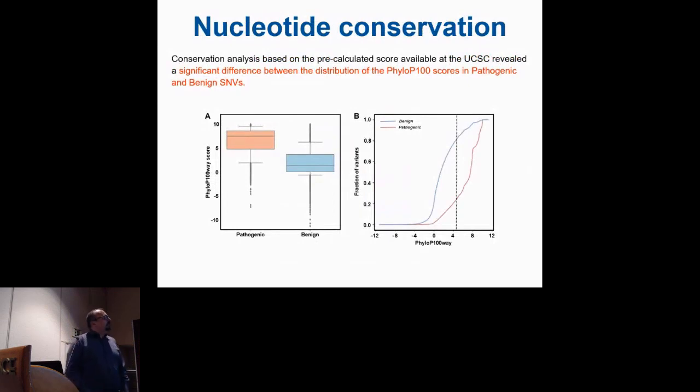We repeated this experiment focusing only on missense variants using the UCSC alignment from 100 genomes, obtained with a method called MULTIZ. They provide this alignment where you can calculate conservation in terms of nucleotide residues. They also provide scores called PHYLO-P and FASTCONS that tell for each position the level of conservation.